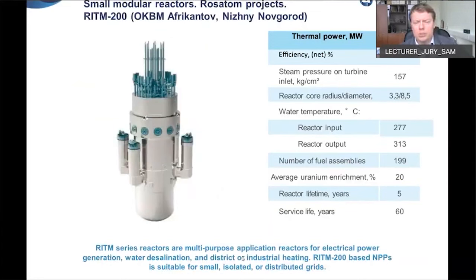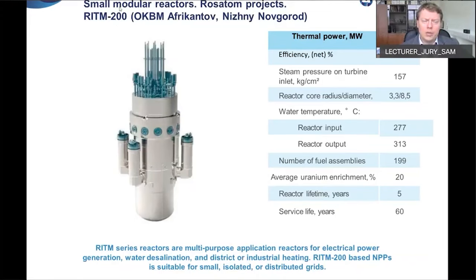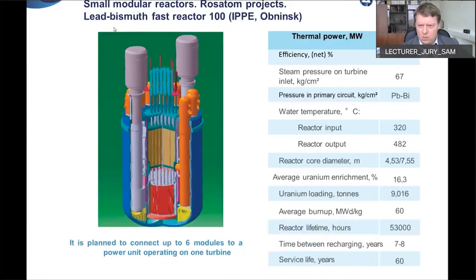The small modular reactor RITM-200, designed by OKBM Afrikantov in Saint Petersburg, represents our near-future technology. We will use this reactor in floating nuclear power plants and for deployment in different regions of the Russian Federation and abroad. Its electrical output is 50 megawatts per unit.